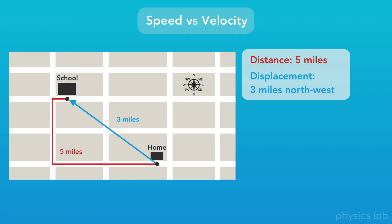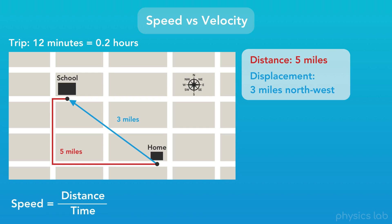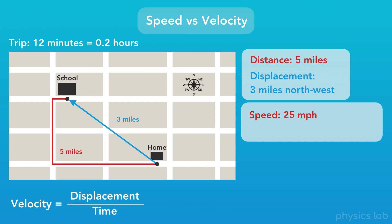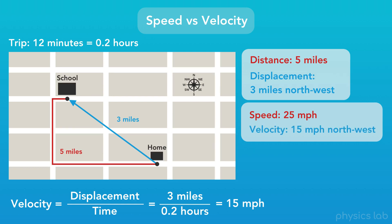What about our driving example? We already found the distance and displacement of our car. Let's say the trip takes us 12 minutes, which equals 0.2 hours. Speed is distance over time, which would be 5 miles divided by 0.2 hours, giving us 25 miles per hour — that's our average speed. Velocity is displacement over time, so to find the magnitude we do 3 miles divided by 0.2 hours, which gives us 15 miles per hour. But velocity is a vector, so we need to include the direction. Our average velocity would be 15 miles per hour northwest.